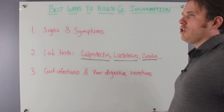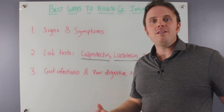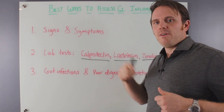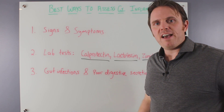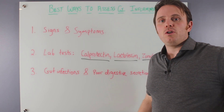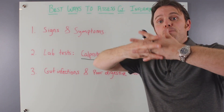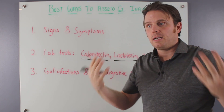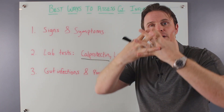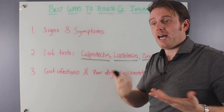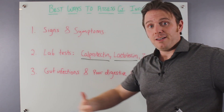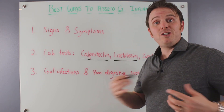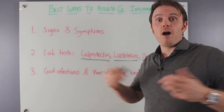We may also see zonulin go up. Zonulin is a protein that increases with gut permeability. When we have inflammation — whether from food, infection, or poor digestion — zonulin goes up, which signals that the tight junction, that gut permeable barrier, opens up and unzips, just like unzipping your jacket. That allows undigested food and bacteria particles to get into the bloodstream, which can increase the immune response.